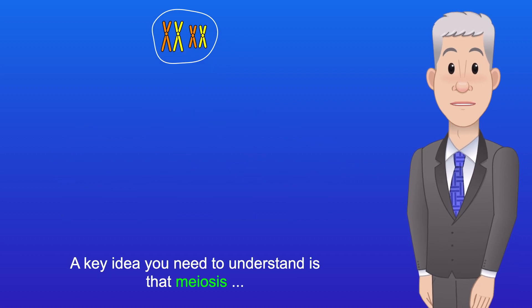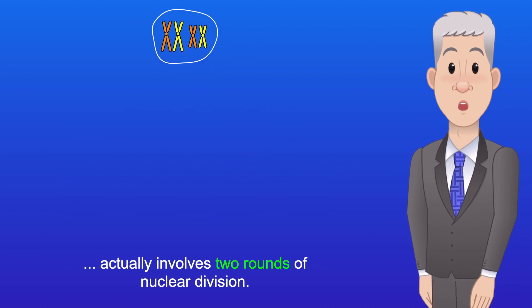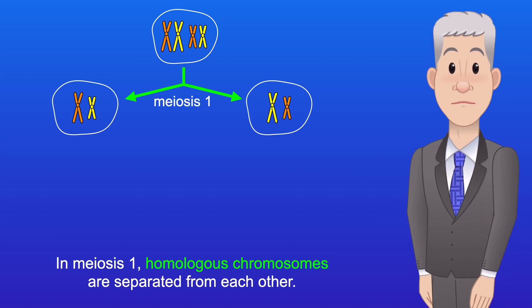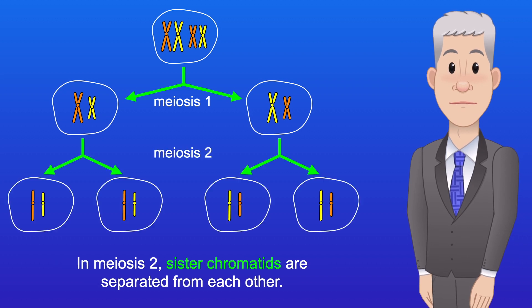A key idea you need to understand is that meiosis actually involves two rounds of nuclear division. In meiosis I, homologous chromosomes are separated from each other. And in meiosis II, sister chromatids are separated from each other.